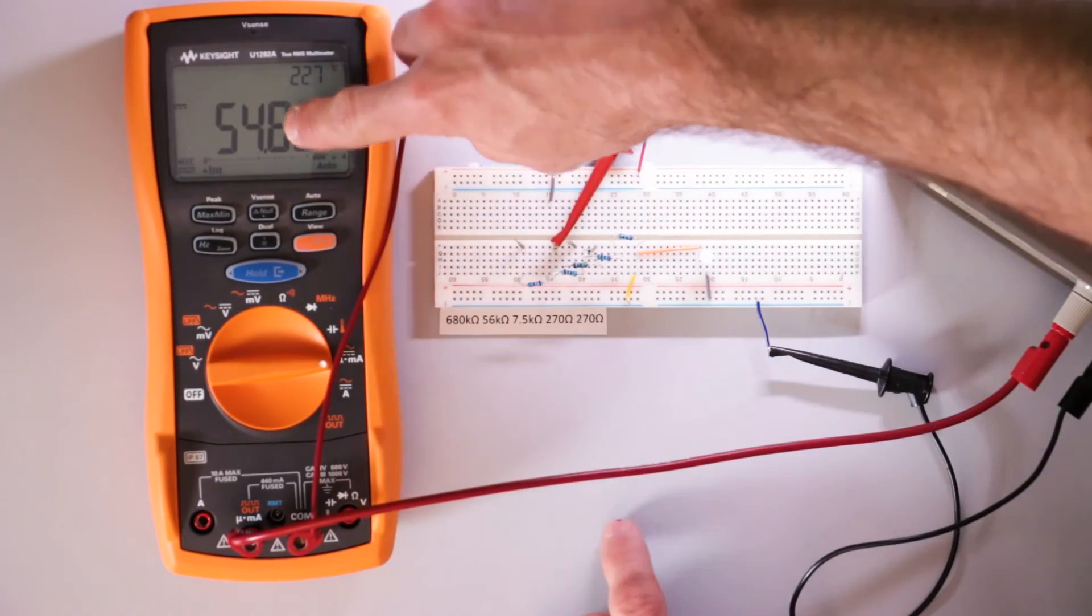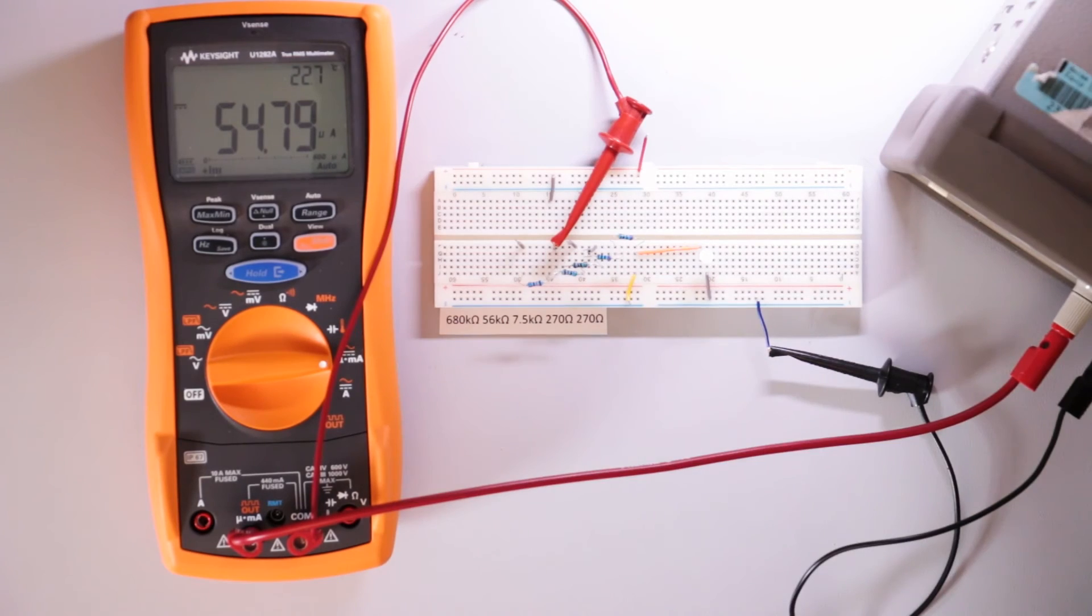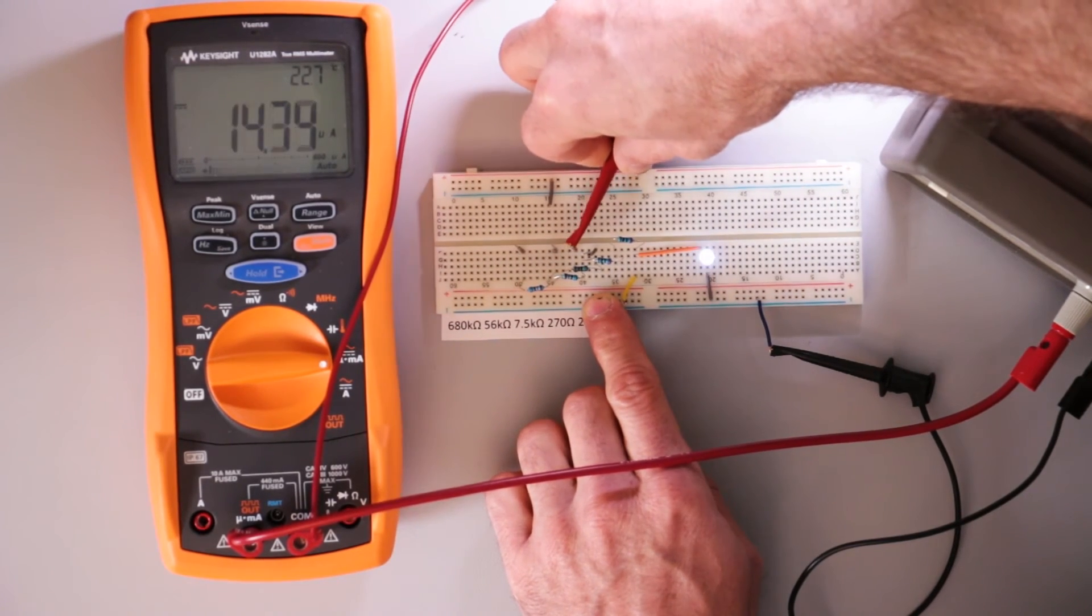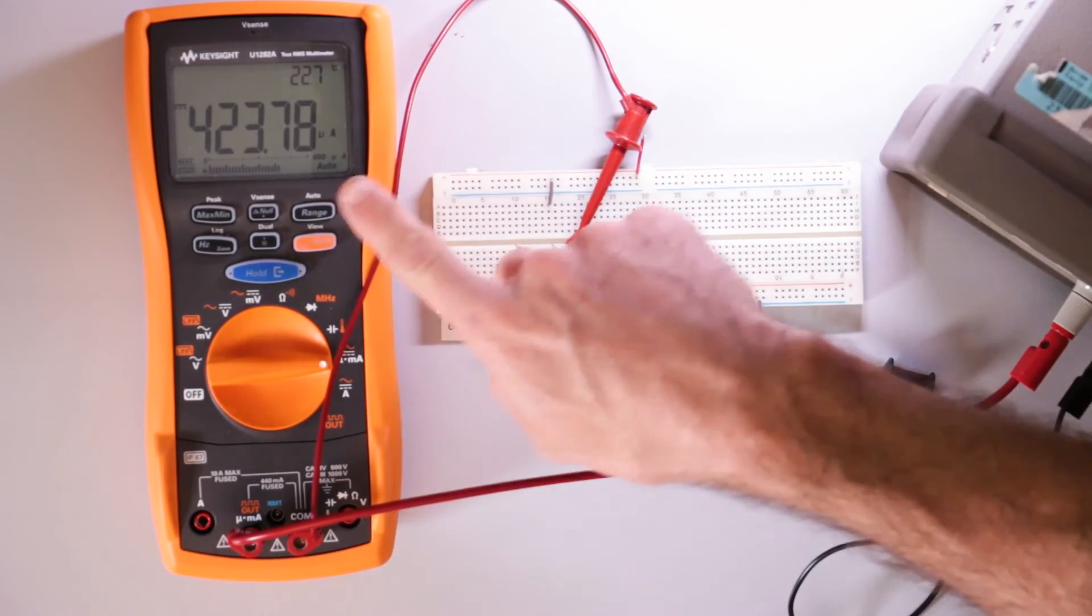And as I move this over here, so it's a little brighter, quite a bit or a little bit more current, 54 microamps. Move it over one more so quite a bit brighter and now we're at 423 microamps.